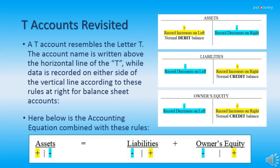Here we revisit T-Accounts. A T-Account is exactly that — it's an account that resembles the letter T. The account name is written above the horizontal line of the T, while data is recorded on either side of the vertical line according to the rules for balance sheet accounts. Hopefully by now you are starting to understand which have normal debit balances and which have normal credit balances. Here below is the accounting equation combined with these rules, and on the next slide we add the income statement accounts.